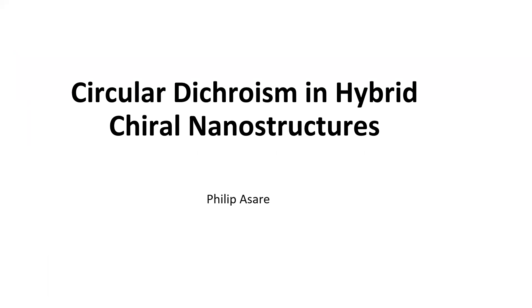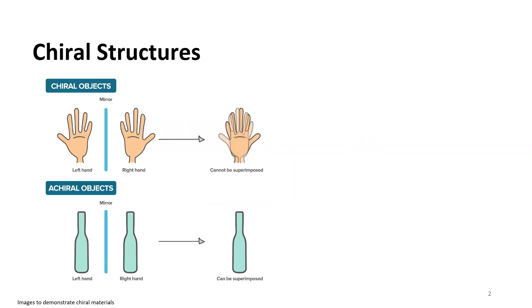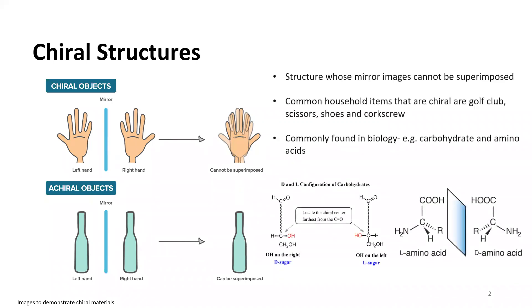Our last speaker is Philip. I'm presenting on hybrid chiral nanoparticles, and I'll start by handing over context from Dr. Gibbs. To understand chirality: pick up your hand and lay it on the back of the other — your thumbs don't superimpose, making them chiral. For an achiral object like a bottle, you can lay it on the other and it will superimpose. Chiral objects are commonly found in household items like golf clubs, scissors, and shoes, and in biological items like carbohydrates and amino acids.